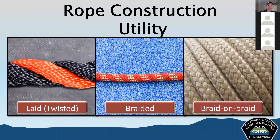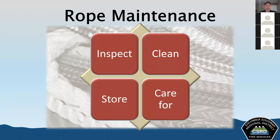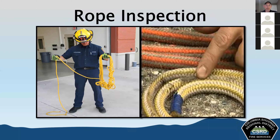If we're going to be using ropes, we need to understand rope maintenance — how to care for, clean, inspect, and store our rope. All types of rope must be inspected after use, and unused rope should be inspected at least once a year. Inspections for life safety rope need to be documented in a rope log. When inspecting, we want to inspect both visually and by touch, checking for things like embedded shards of glass, metal shavings, wood splinters, or other foreign objects that might damage the rope.